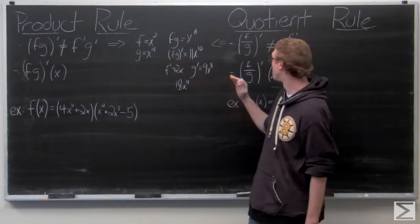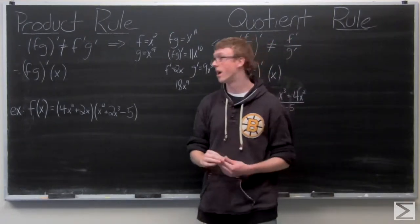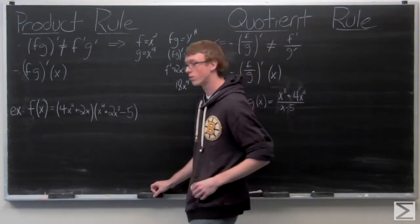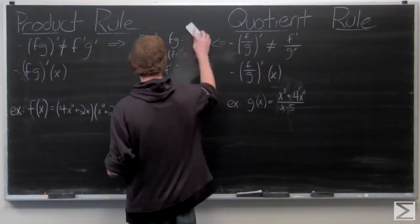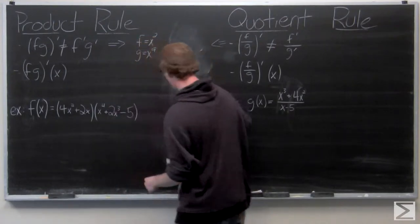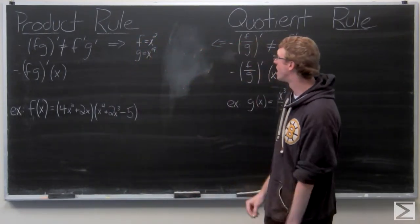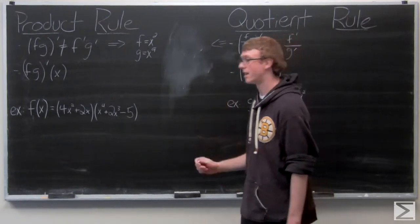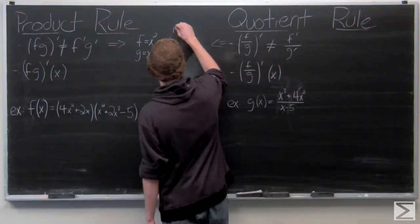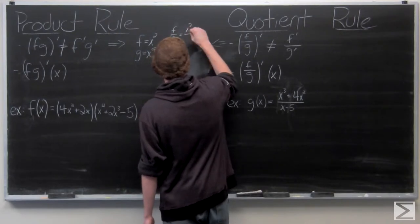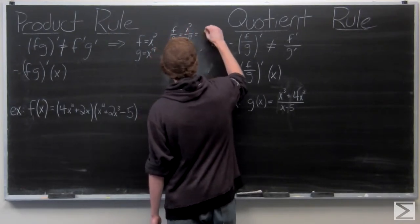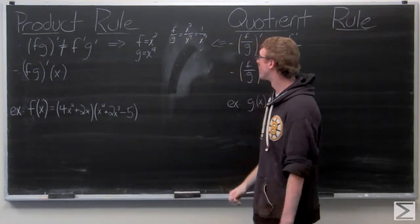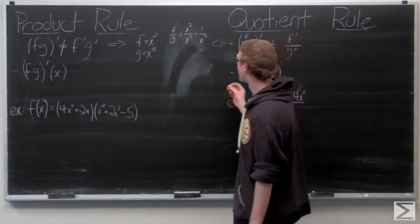So these are the main mistakes that people normally make using the product and quotient rules. Now we'll take a look at why this isn't true for the quotient rule either. In this case, f over g would be x squared over x to the ninth, which is just 1 over x to the seventh, or x to the negative 7.